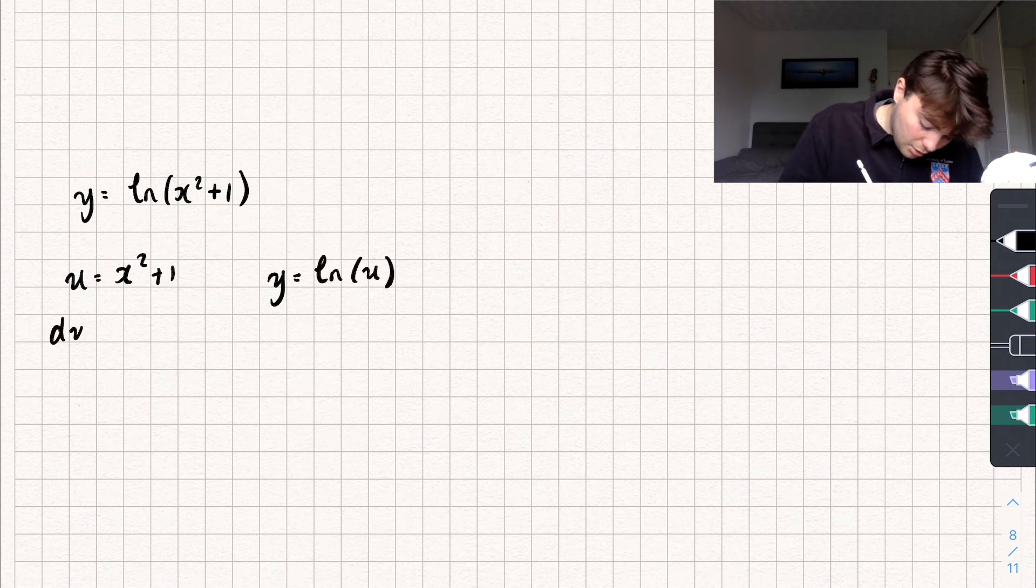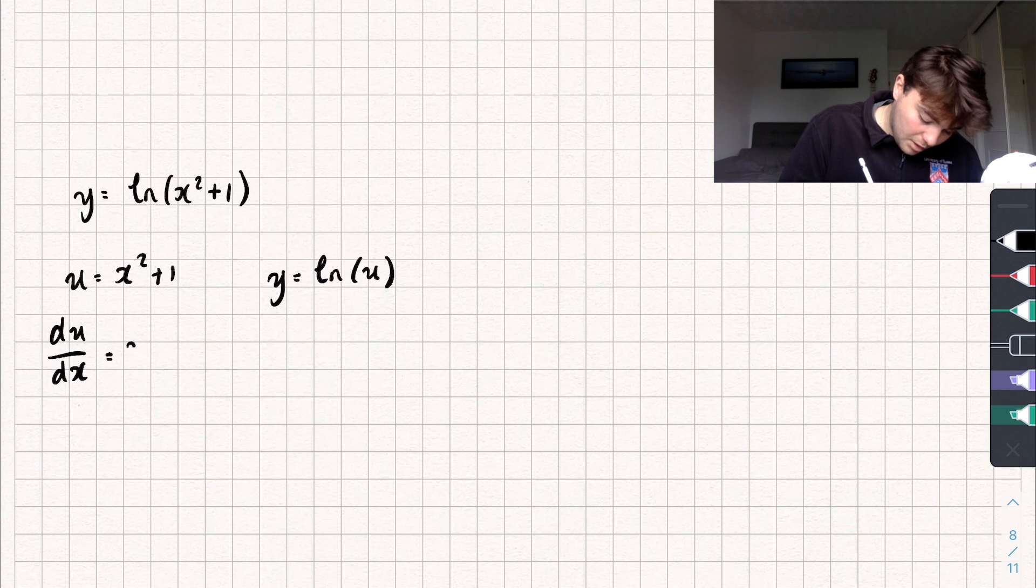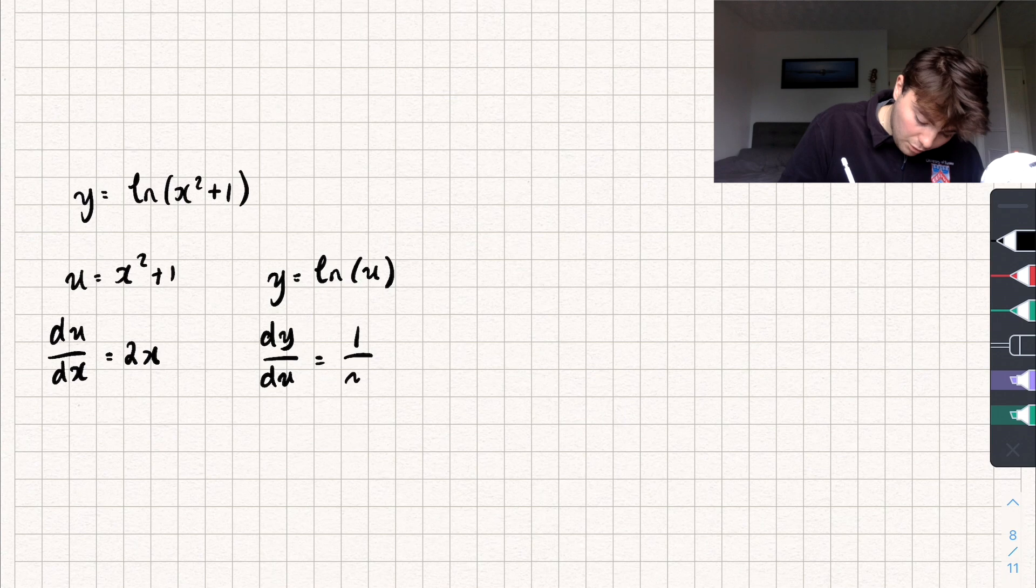So du by dx, well that's just going to be equal to 2x. And dy by du is going to be equal to 1 over u, because we just worked out the natural log of x.